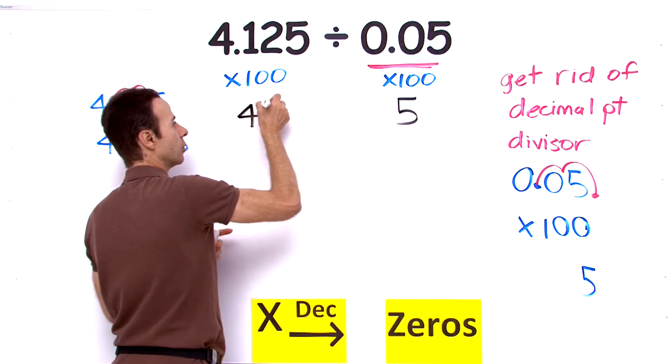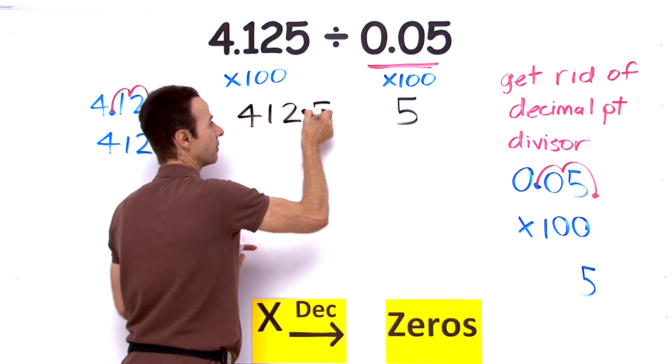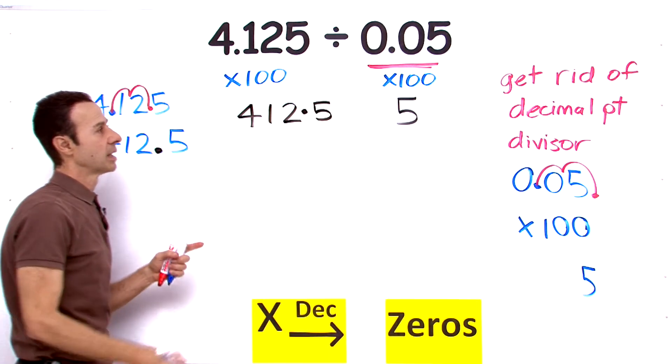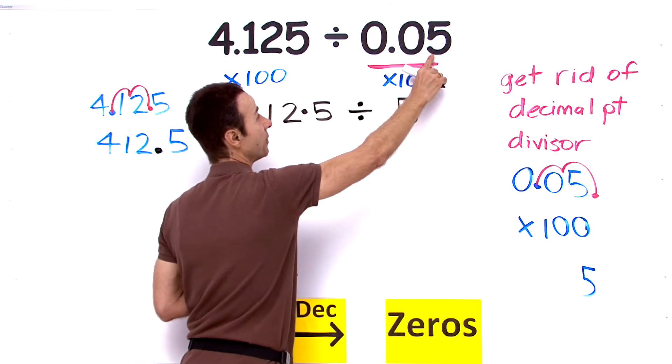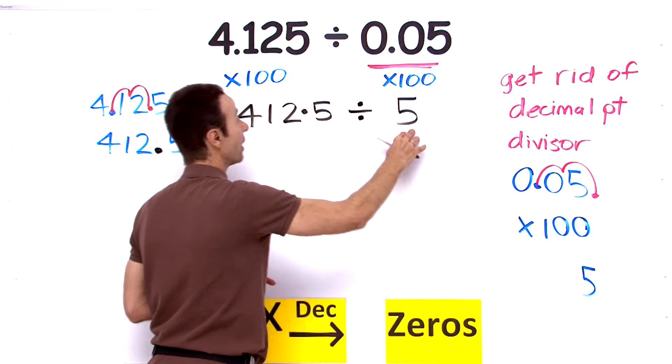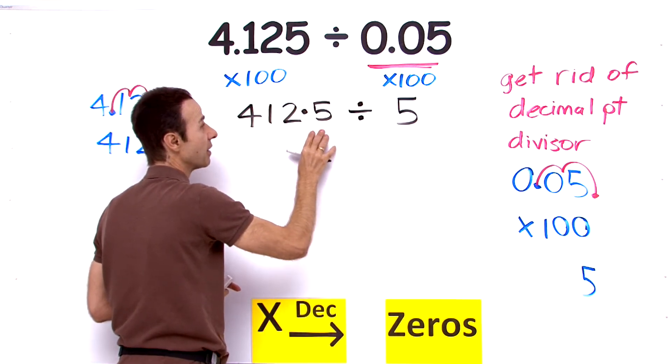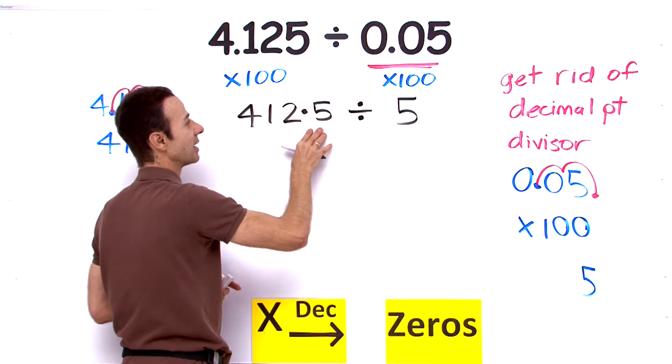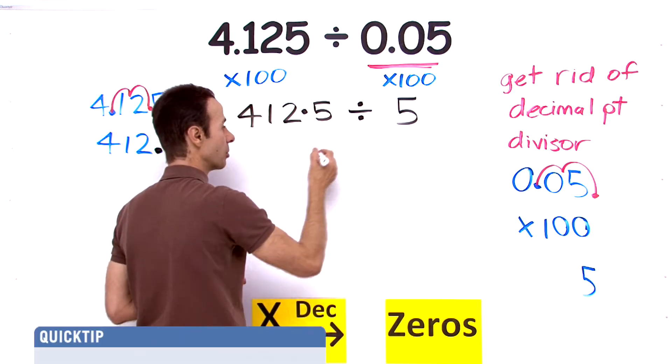So 0.05 we multiply by 100, we got 5. 4.125 multiply by 100, we got 412.5. So dividing this into that is the same as dividing that into that.